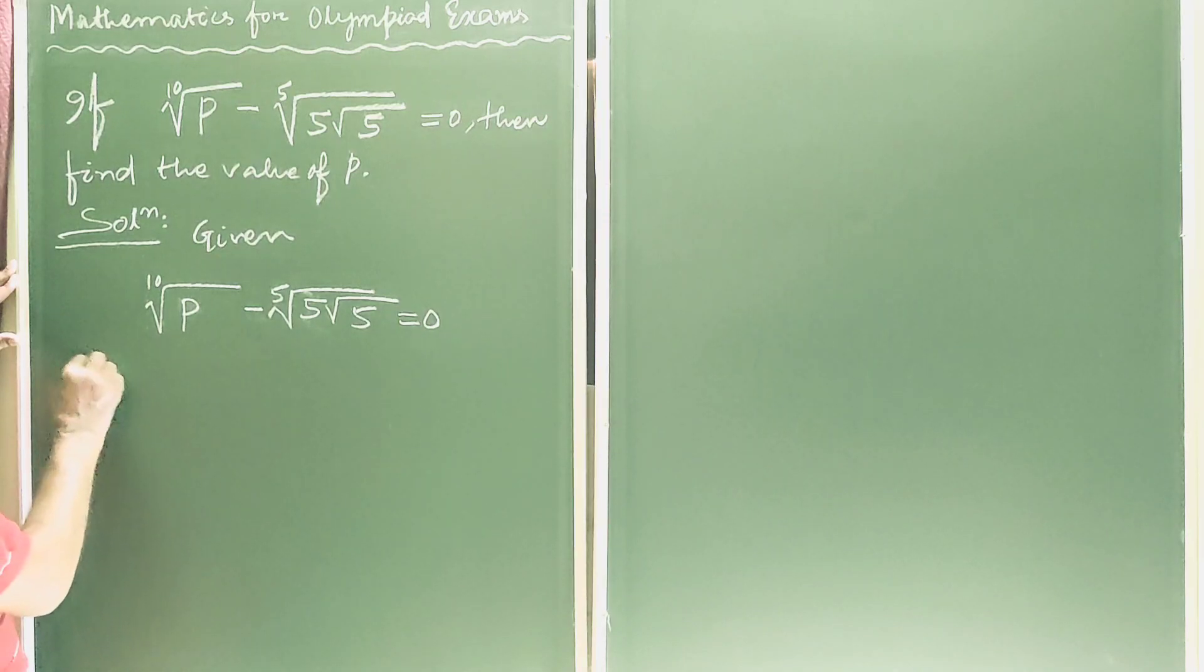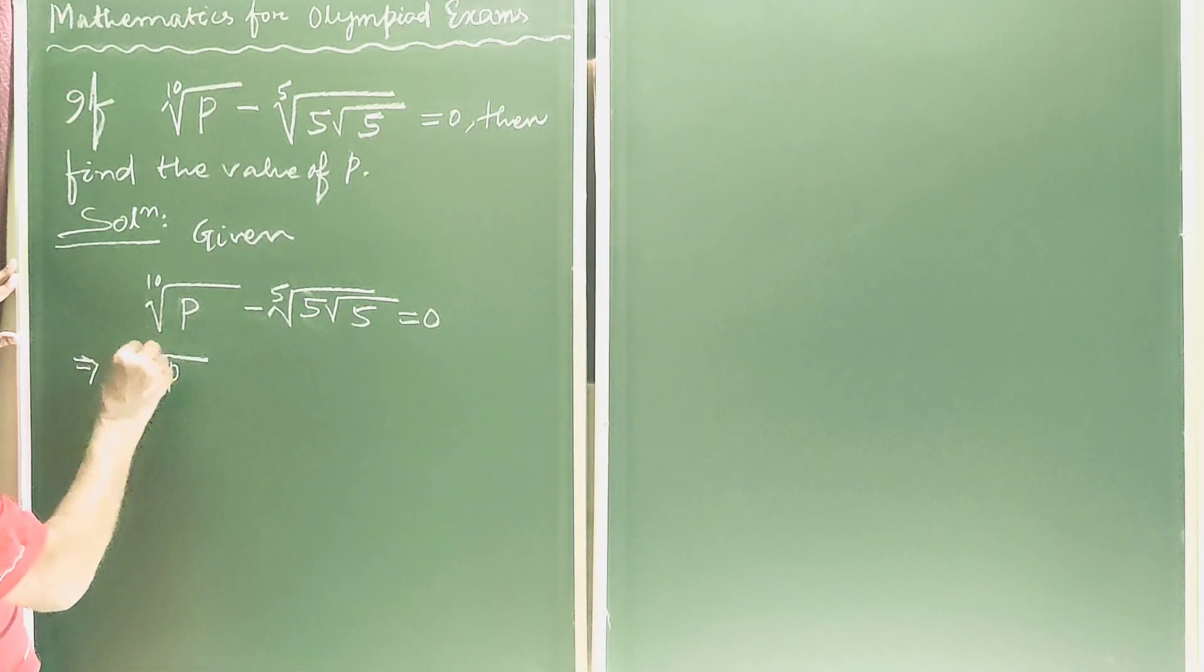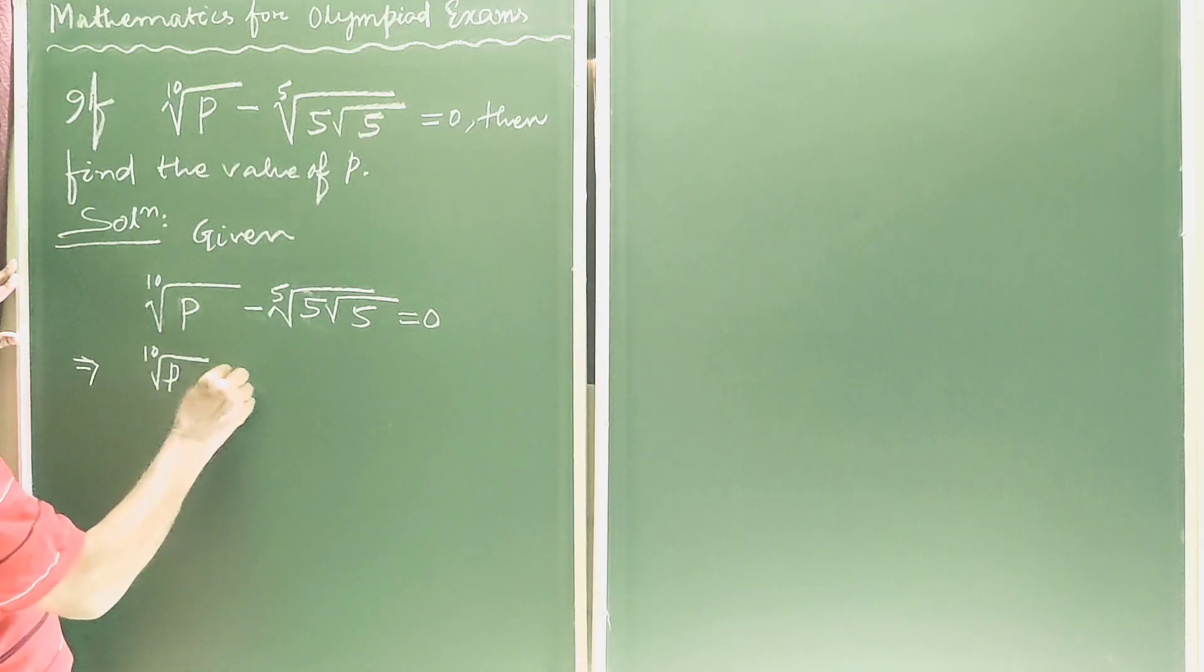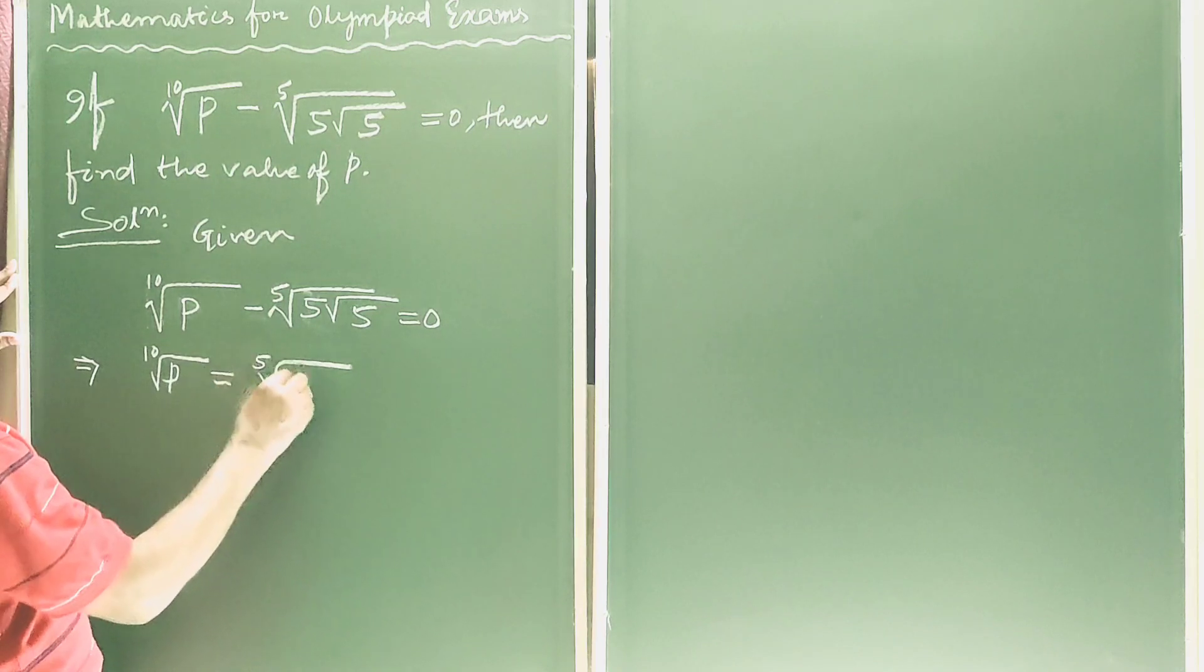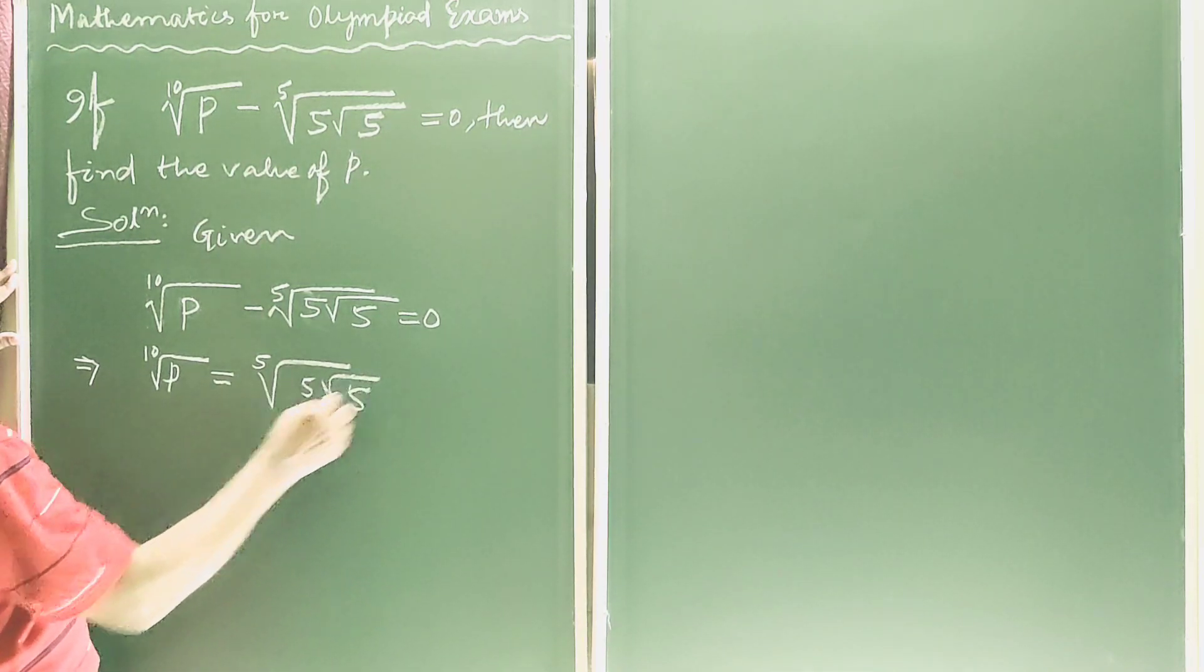So we can write this implies 10th root of p is equal to 5th root of 5 into root 5.